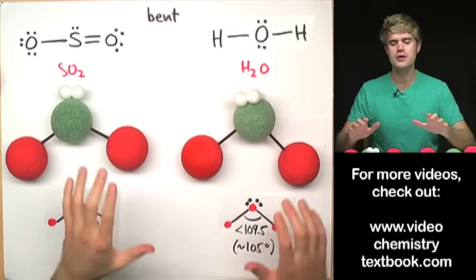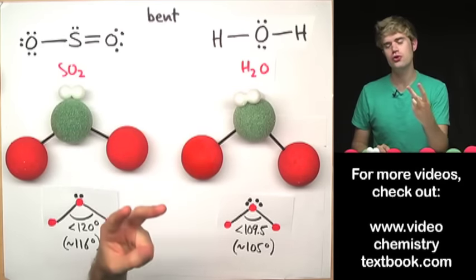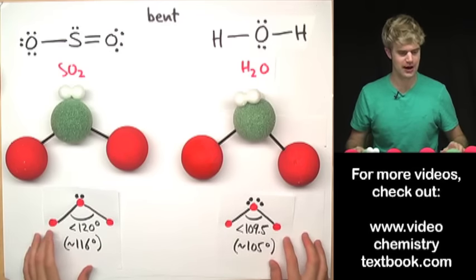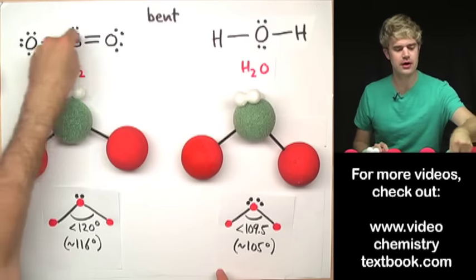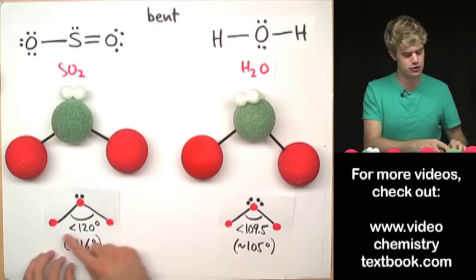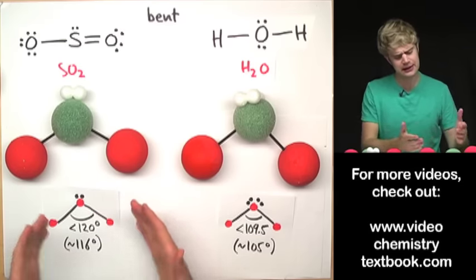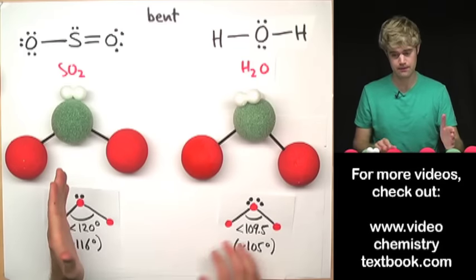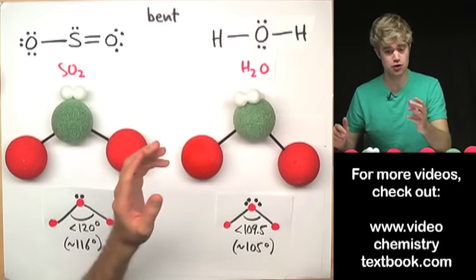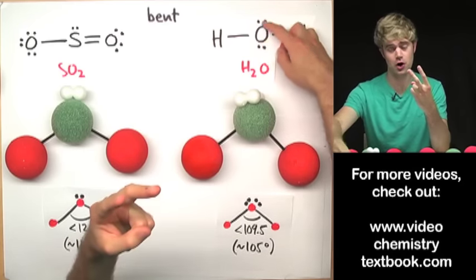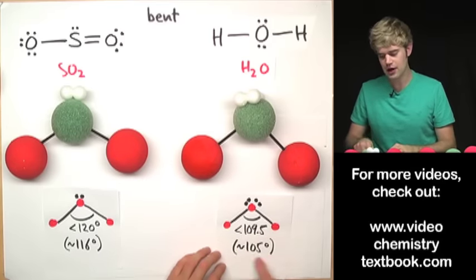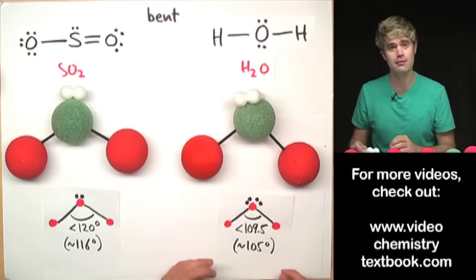There's one important thing to note about the bent shape: there are two ways to get a molecule with a bent shape, and they're different. You can get a bent shape when you have three things around a central atom and one of them is an unshared electron pair — like SO₂ — giving an angle a little less than 120 degrees. Another way to get a bent shape is when you have four things around a central atom but two of them are lone electron pairs — in that case, because everything is tighter, you have an angle of about 105 degrees, a little less than 109.5.